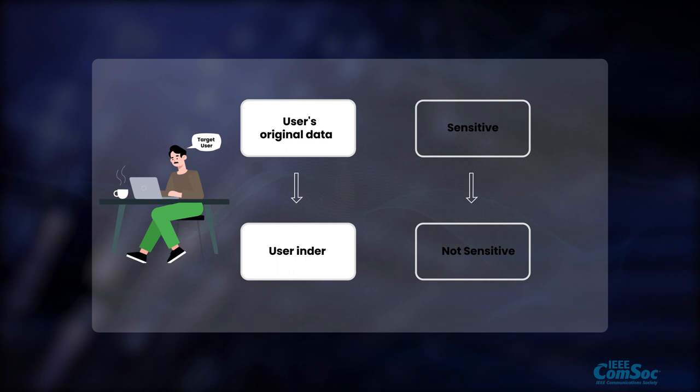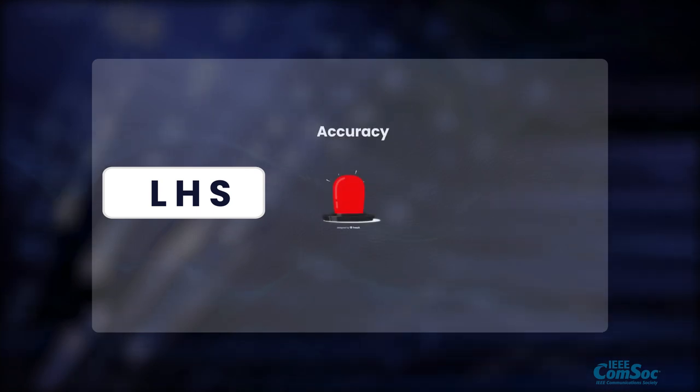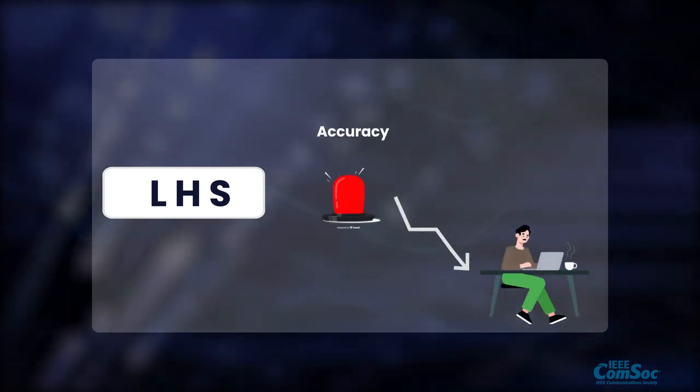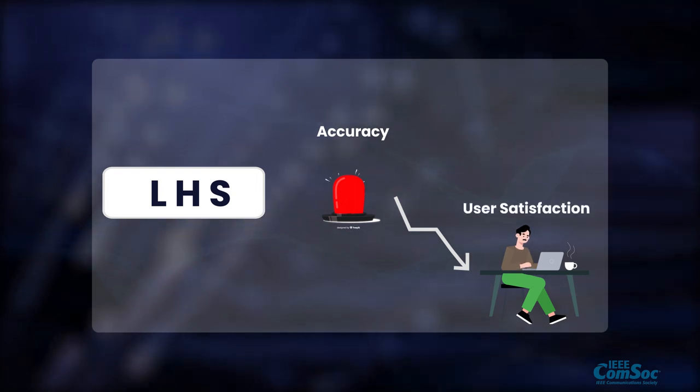However, as a kind of probabilistic neighbor search strategy, LSH cannot always ensure good accuracy when performing privacy-aware recommendations, which decreases the level of user satisfaction considerably.